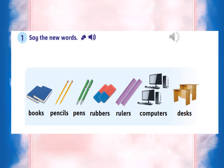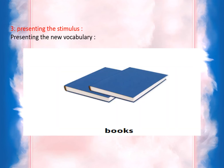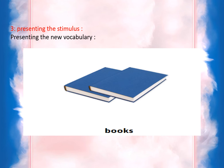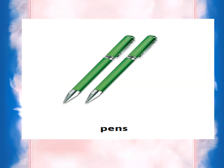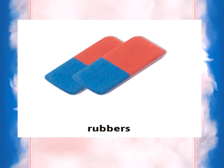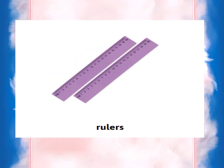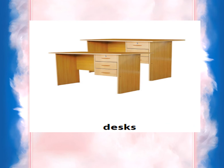Very good. After listening to the CD player, I'm going to follow the strategy of learning by photo. You can read: books — yes. Pencils — yes. Pencils — yes. What are these? These are raffles. Rulers. Computer. Desk. We come to do affirmative assessment, activity number one, workbook page twelve.